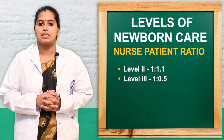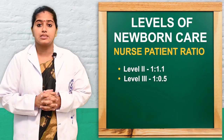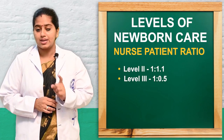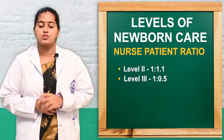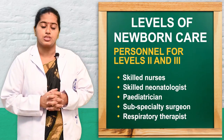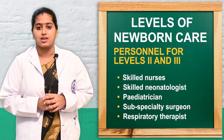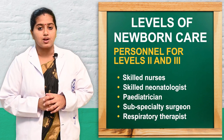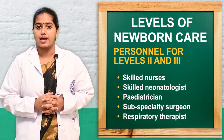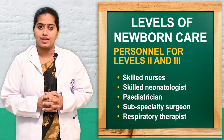Regarding personnel for levels 2 and 3: skilled nursing personnel are needed. In level 2, the nurse-to-newborn ratio is 1:1; in level 3, it is 1:0.5. Skilled and trained pediatricians must be available full time, along with skilled neonatologists, pediatric surgeons, specialty staff, anesthesiologists, and respiratory therapists. Level 2 care is given at district or teaching hospitals; level 3 at specialized neonatal ICU hospitals.